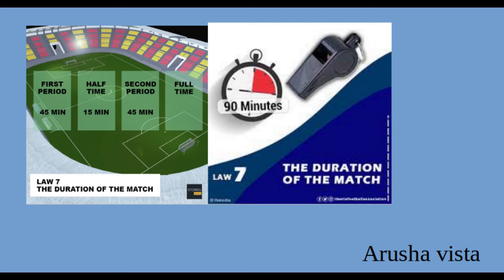If tied at the end of regular time in some competitions, the game may go into extra time, which consists of two further 15-minute periods. If the score is still tied after extra time, the teams proceed to a penalty shootout — known officially in the laws of the game as kicks from the penalty mark — to determine the winner.